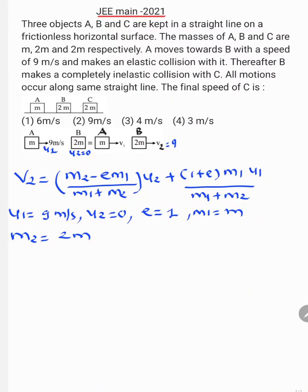JEE Main 2021 MCQ. Three objects A, B and C are kept in a straight line on a frictionless horizontal surface. The masses of A, B and C are M, 2M and 2M respectively. A moves towards B with a speed of 9 meter per second and makes an elastic collision with it. Thereafter, B makes a completely inelastic collision with C. All motions occur along same straight line. Find the final speed of C.